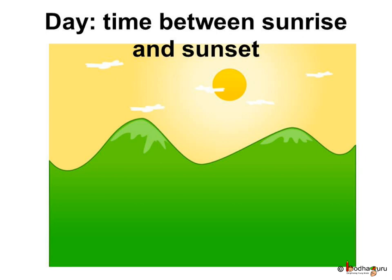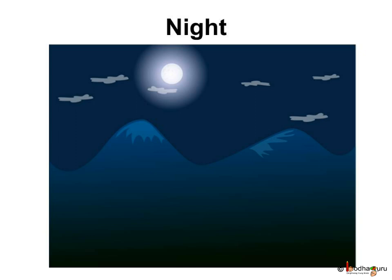The time between sunrise and sunset is the daytime. We do most of the activities during the daytime when all of us are awake and the sun is shining brightly. After sunset, it becomes dark as the sun is no longer visible. The time between sunset and the sunrise of the next day is the nighttime.